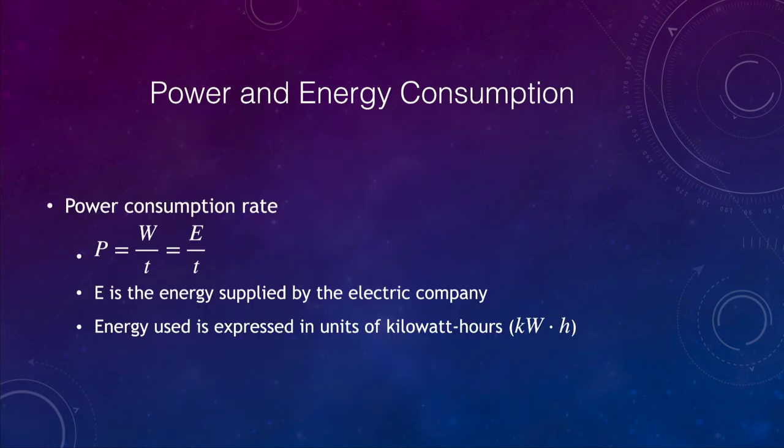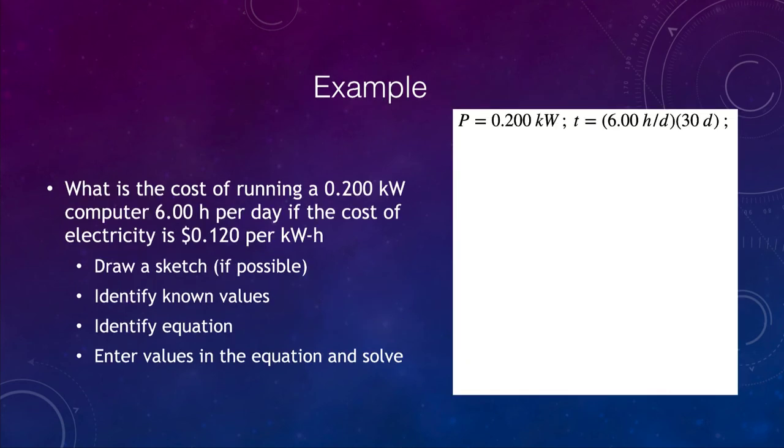Energy consumption we can also look at, and we're going to look at an example here in just a minute of the power consumption rate. So power is the work divided by the time or the amount of energy divided by the time, where E is the energy that is provided by your electric company. And that energy used is expressed in kilowatt-hours. So that's the unit for the energy. So if you examine an electric bill, it will tell you how many kilowatt-hours were consumed over that past month.